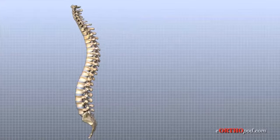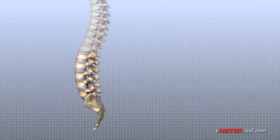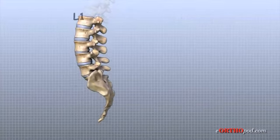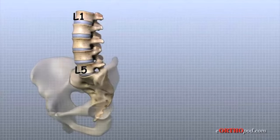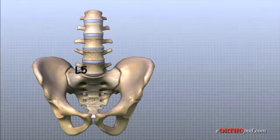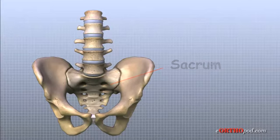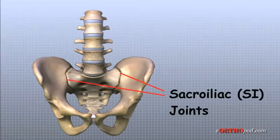The lumbar spine is made up of the lower five vertebrae. Doctors often refer to these vertebrae as L1 to L5. The lowest vertebra, L5, connects to the top of the sacrum — a triangular bone at the base of the spine that fits between the two pelvic bones. There is a joint on each side of the sacrum that connects it to the pelvis, called the sacroiliac, or SI joint.